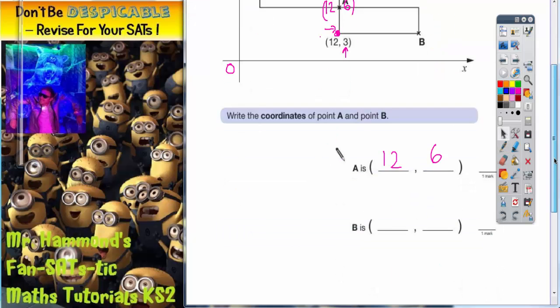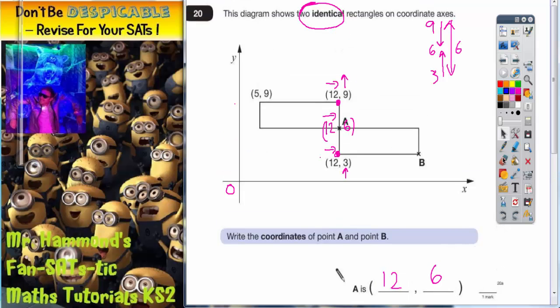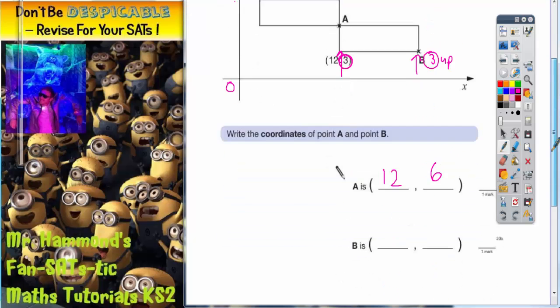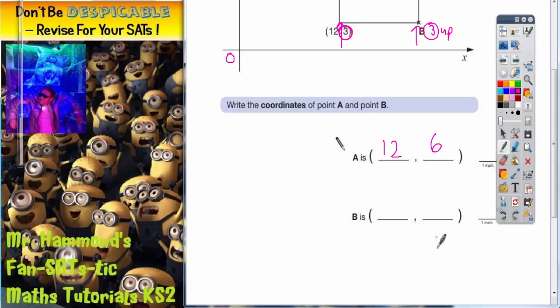Next step, we've got to find point B. We know something about point B already. When we're going up to point B, it's the same amount up as you go up to point A here, and this is 3 up. So if this gap is 3 up, this distance here must also be 3 up. Remember your up part of your coordinate is always the second part, so 3 up would go there. But the question is, how far across is it?